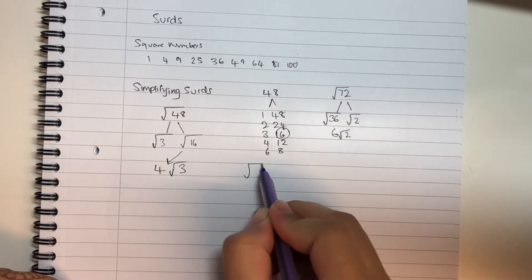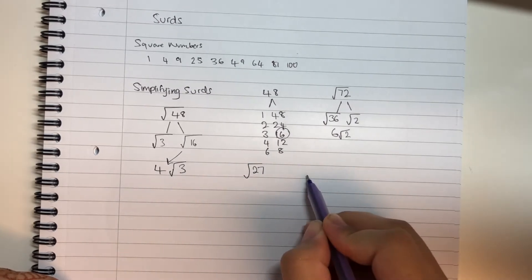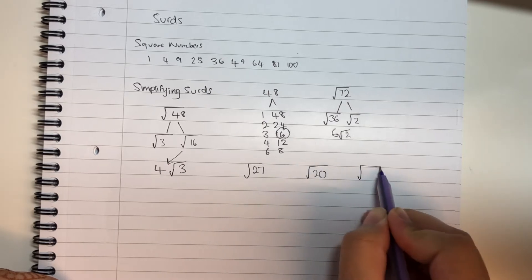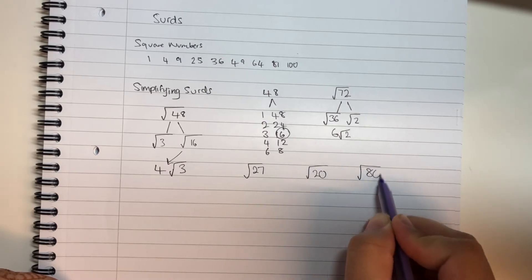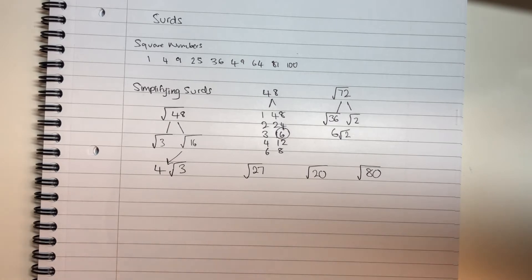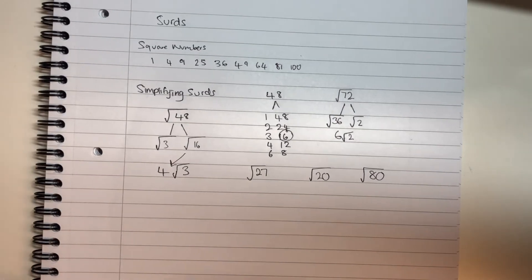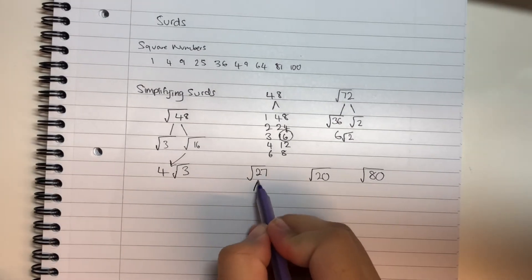A few more examples to try: root 27, root 20, and root 80. Pause for two minutes and have a go at these three questions. Now let's go through them.